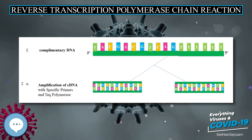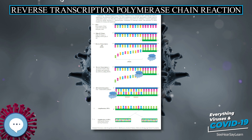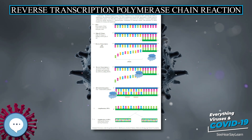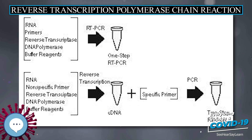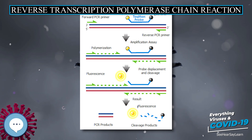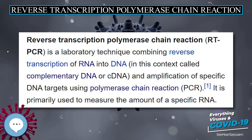The one-step approach minimizes experimental variation by containing all enzymatic reactions in a single environment. It eliminates labor-intensive pipetting of cDNA product prone to contamination. The further use of inhibitor-tolerant polymerases and polymerase enhancers with an optimized one-step RT-PCR condition supports reverse transcription of RNA from unpurified or crude samples such as whole blood and serum. However, the starting RNA templates are prone to degradation in the one-step approach, and it is not recommended when repeated assays from the same sample are required.